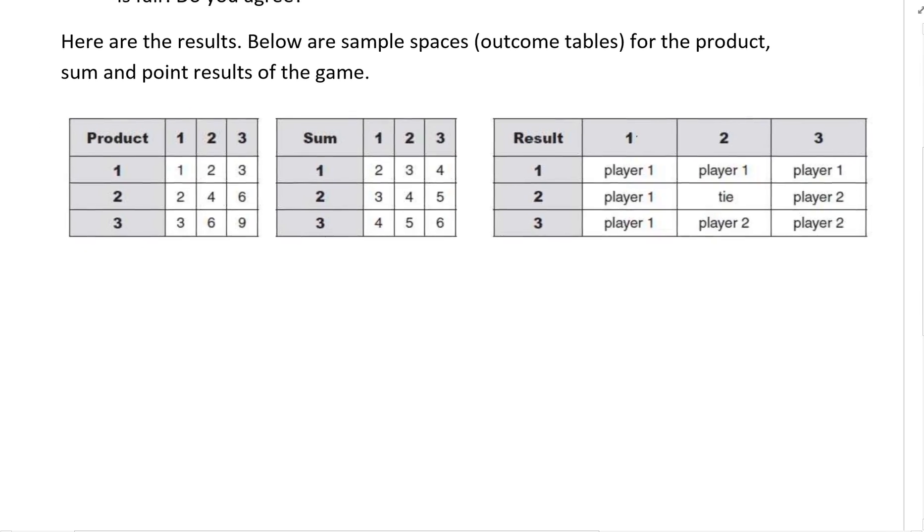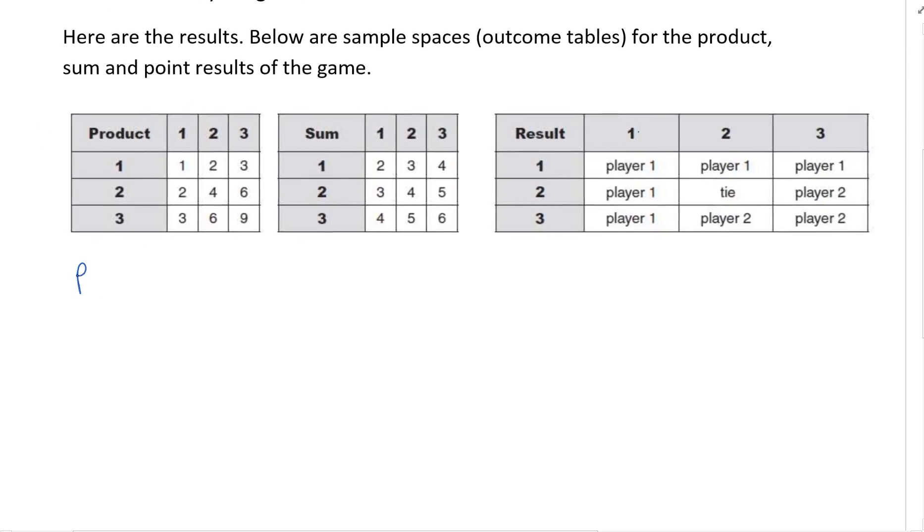So let's figure out the probabilities. The probability of player one winning. And let's figure out the probability of player two winning. And then to make it more complete we should probably also get the probability of getting a tie so we can see what all those probabilities are.